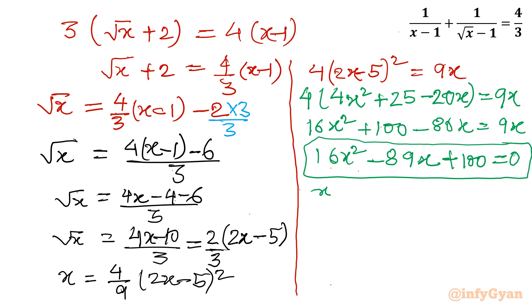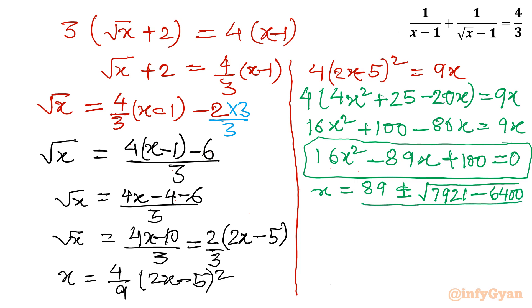Applying the quadratic formula: x equals [89 plus or minus square root of (89 squared minus 4 times 16 times 100)] over (2 times 16). Computing: 89 squared is 7921, and 4 times 16 times 100 is 6400. So x equals (89 plus or minus square root of 1521) over 32.